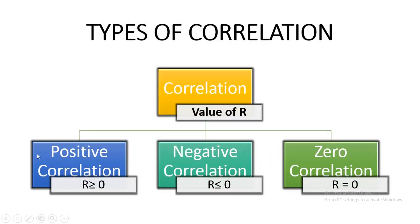There are three types of correlation. The first is positive, where both variables — whether x and y — are moving in the same direction. If x is increasing, y will also increase; if x is decreasing, y will also decrease. The second type is negative correlation, where both variables move in opposite directions — if x is increasing, y will be decreasing. The third type is zero correlation, where both variables have no association and are not related to each other.